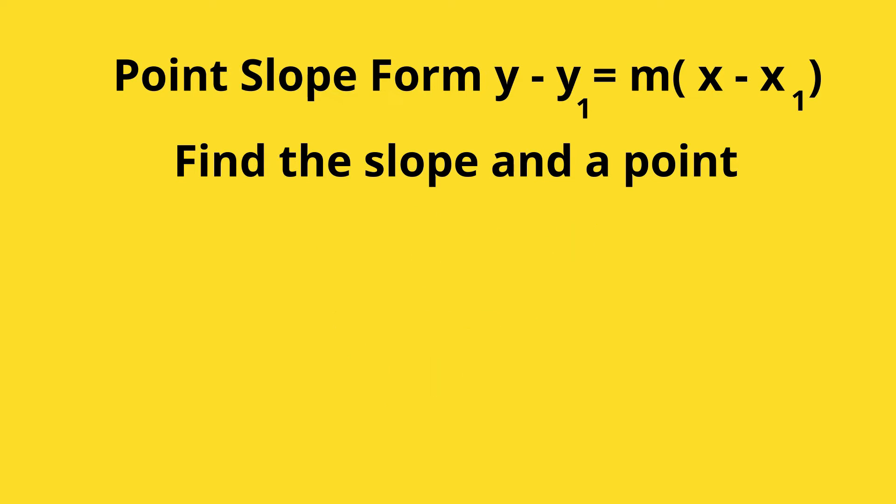Let's look at another example. You have y plus 11 equals 5 times x minus 2. The slope is 5. And for the x value, the x point, you have a negative.